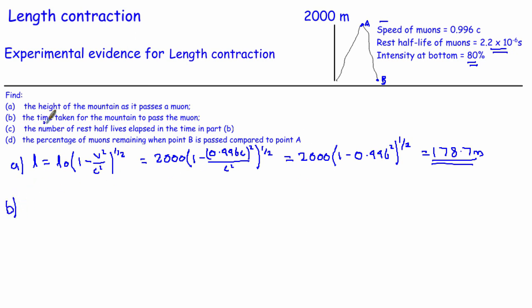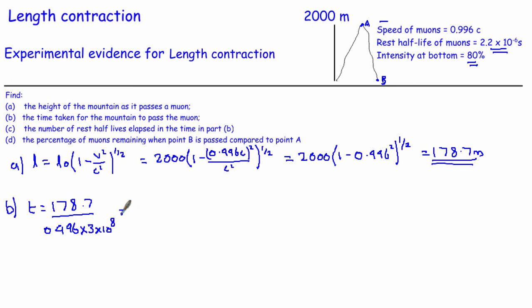For part B, we want to work out how long it takes for the mountain to go past the muon. The mountain is 178.7 metres high and we know the speed, so the time taken is simply distance divided by speed: 178.7 divided by 0.996 times 3 times 10⁸. Doing that gives 5.98 times 10⁻⁷ seconds. From the muon's point of view, that's how long it takes for the mountain to go past it.